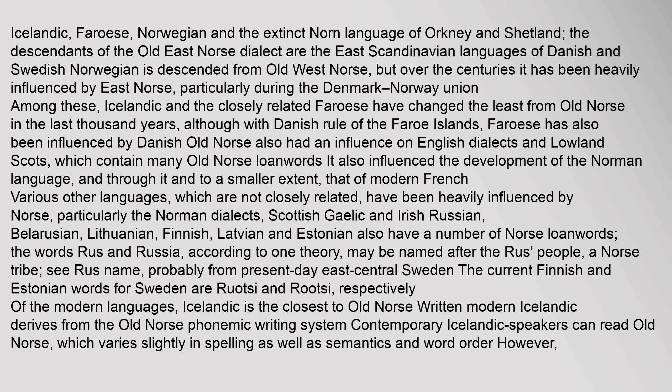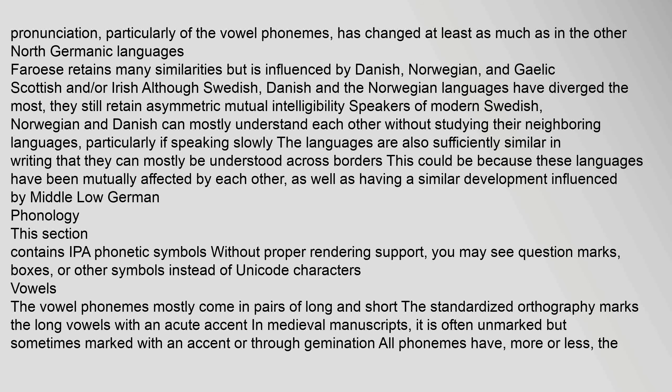Of the modern languages, Icelandic is the closest to Old Norse. Written Modern Icelandic derives from the Old Norse phonemic writing system. Contemporary Icelandic speakers can read Old Norse, which varies slightly in spelling as well as semantics and word order. However, pronunciation, particularly of the vowel phonemes, has changed at least as much as in the other North Germanic languages. Faroese retains many similarities but is influenced by Danish, Norwegian, and Scottish or Irish Gaelic. Although Swedish, Danish and the Norwegian languages have diverged the most, they still retain asymmetric mutual intelligibility. Speakers of modern Swedish, Norwegian and Danish can mostly understand each other without studying their neighbouring languages, particularly if speaking slowly. The languages are also sufficiently similar in writing that they can mostly be understood across borders, partly due to mutual influence and similar development affected by Middle Low German phonology.